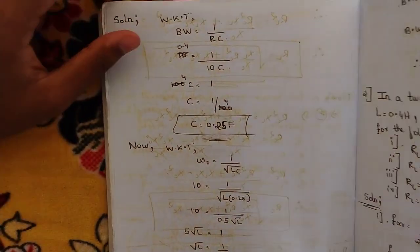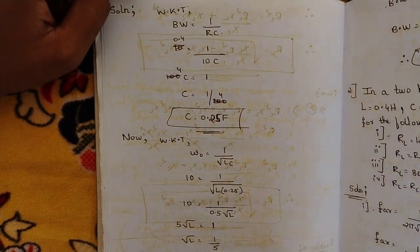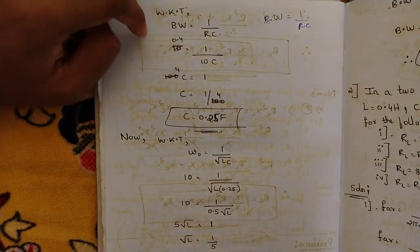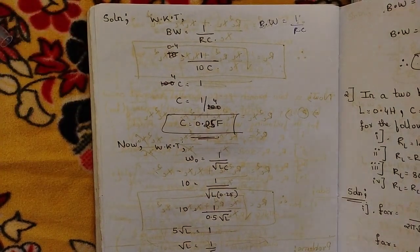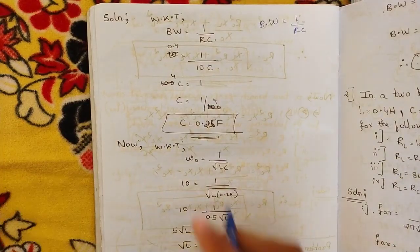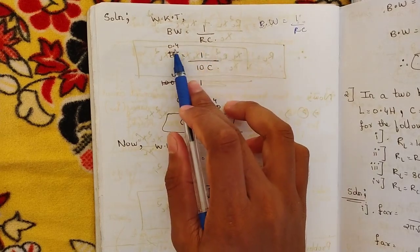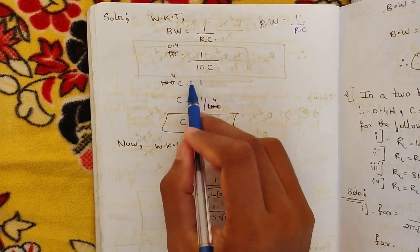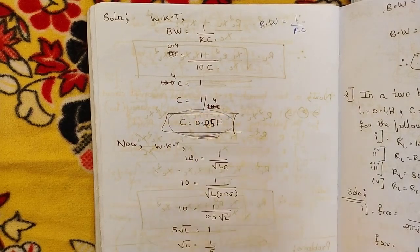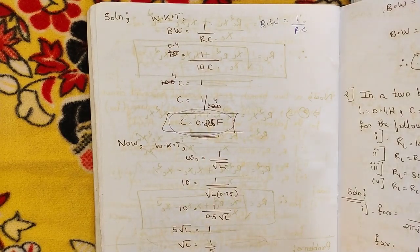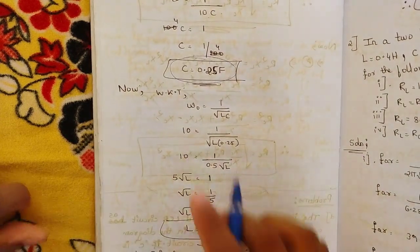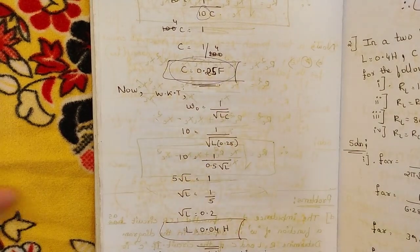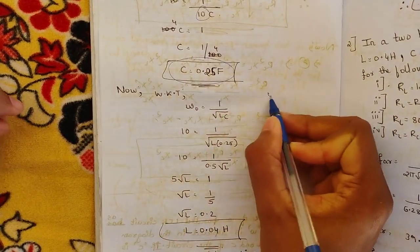First, let us find the value of capacitance. We know that bandwidth equals 1 divided by RC. Bandwidth is 0.4, R is 10 ohms, so 0.4 × 10 = 4, meaning 4C = 1, therefore C = 1/4 = 0.25 Farad. The value of R is already given as 10 ohms.